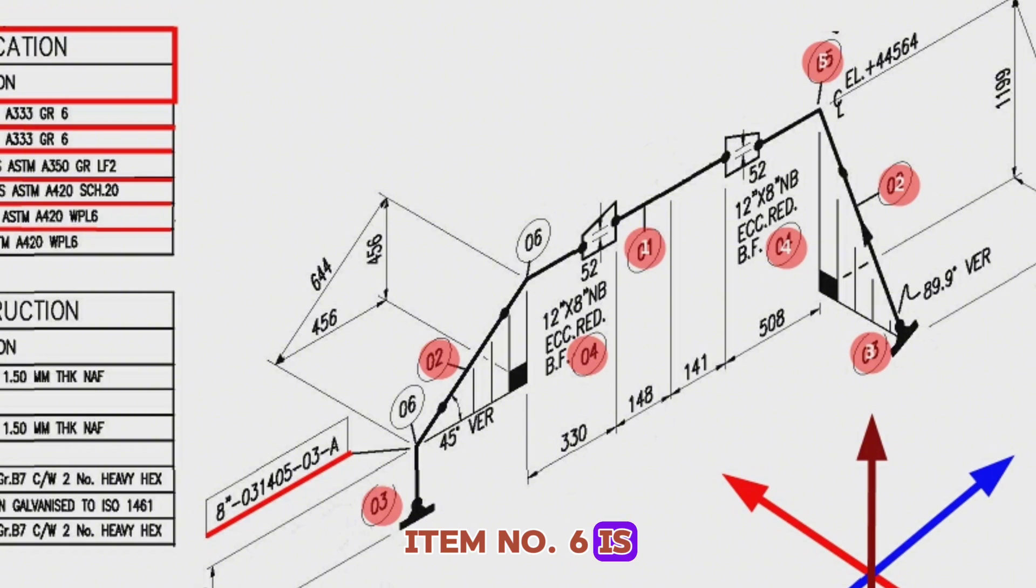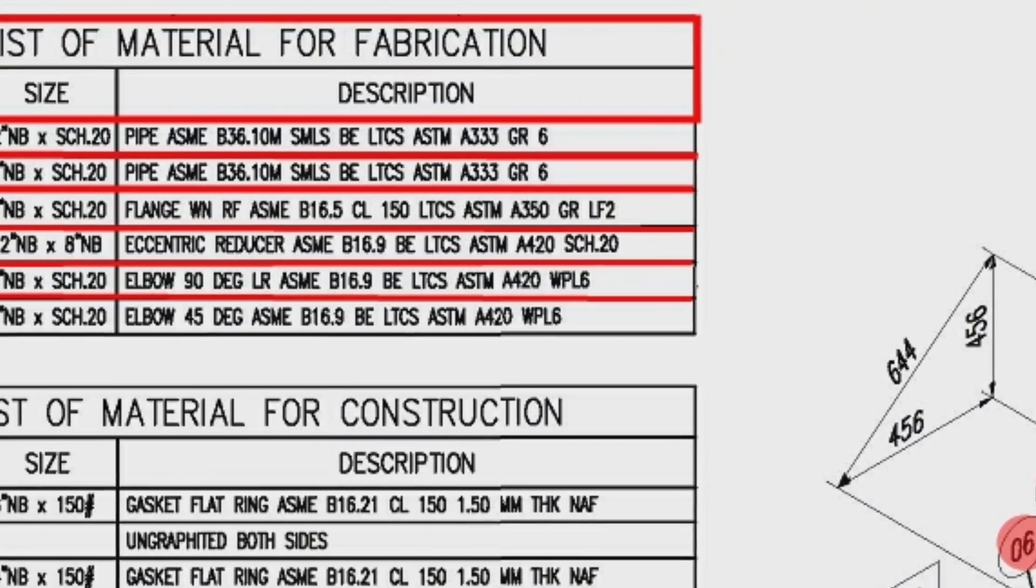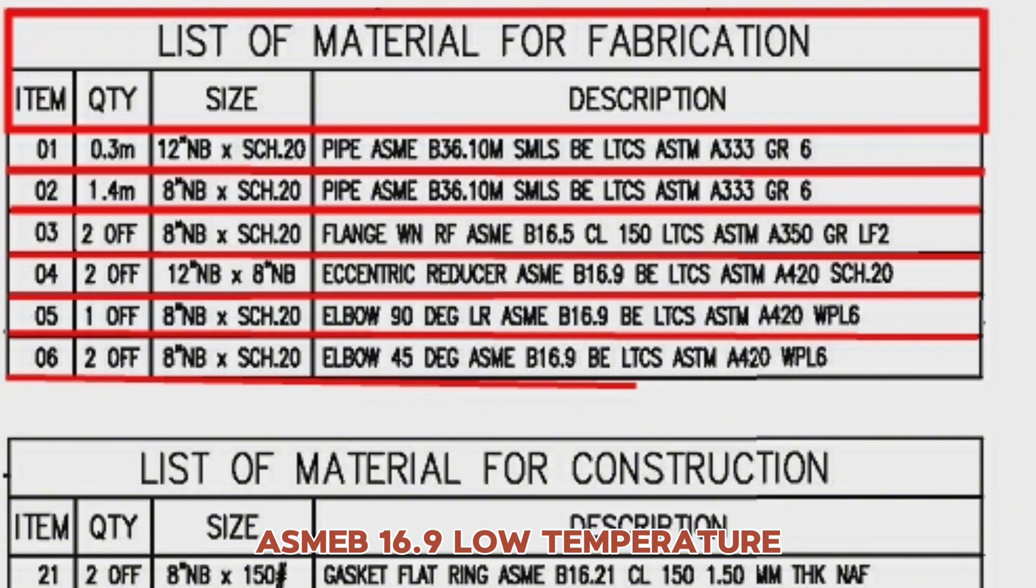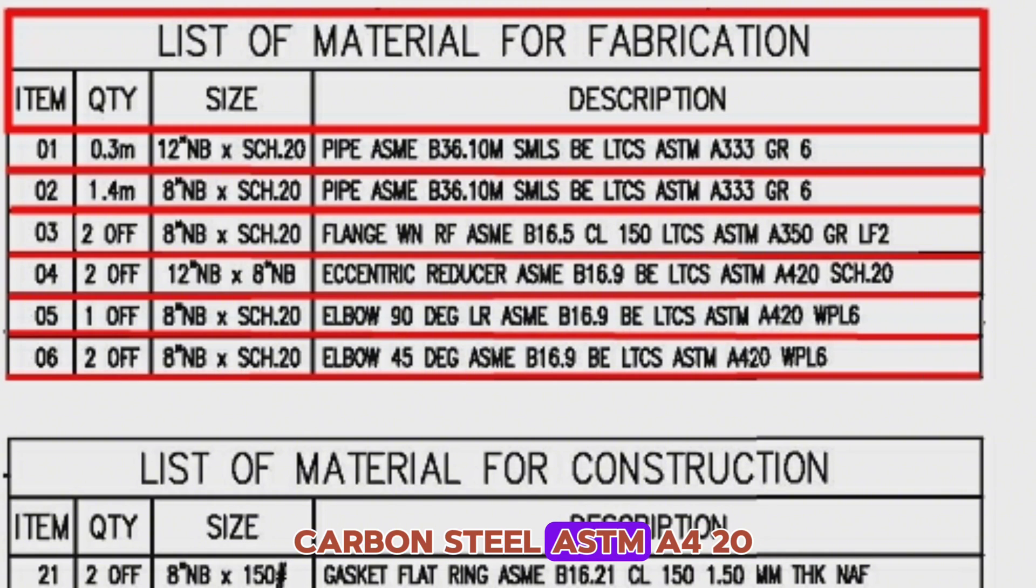Item number 6 is shown in two places in the isometric drawing. Let's look at the bill of material. Item number 6, quantity is 2-off, size is 8-inch NB, schedule 20, elbow 45-degree, ASME B16.9, low-temperature carbon steel, ASTM A420.